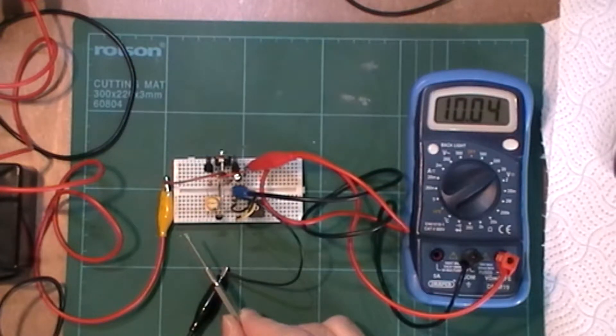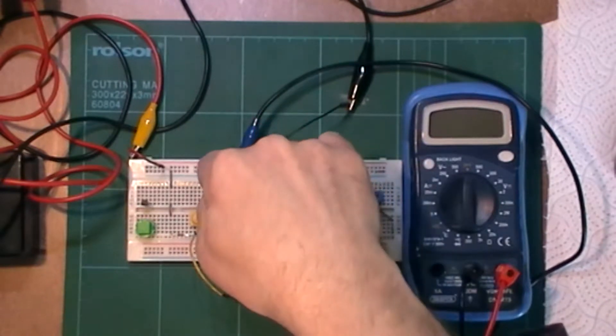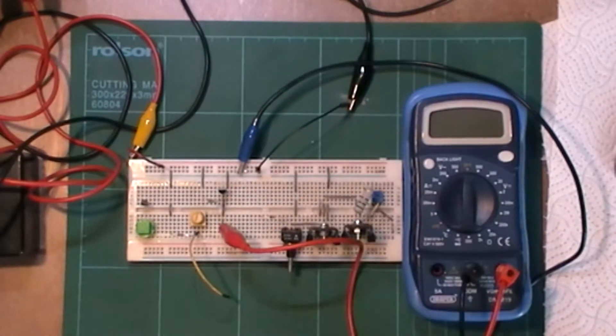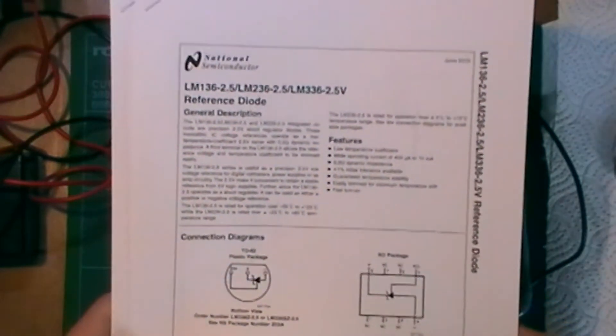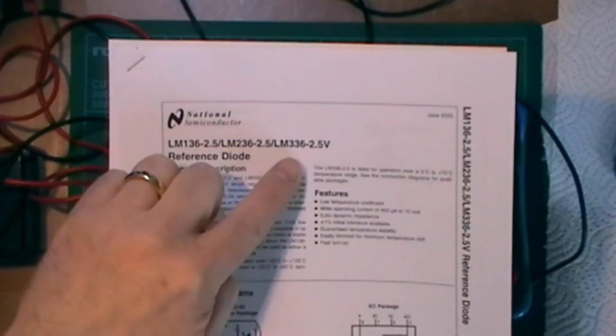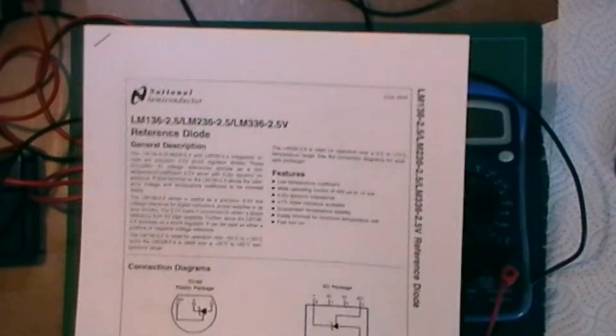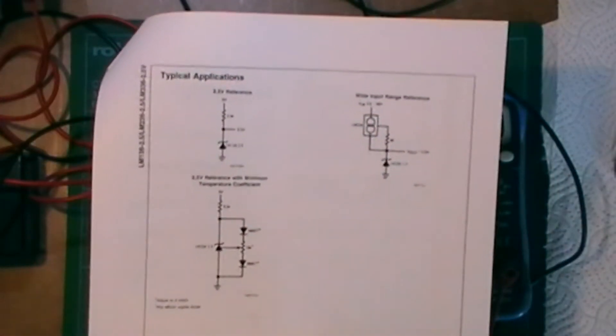So anyway let's have a look at the actual 336 themselves. So here we have the LM336 on here on the breadboard. Now there are two versions of this. According to the data sheets I've got from National Semiconductor, you can get an LM136, a 236 and the 336 with a 2.5 volt reference.